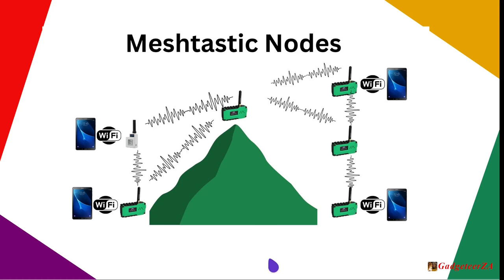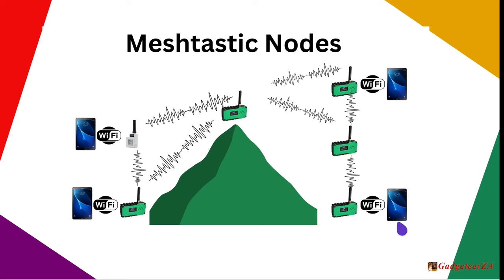Now to explain the mesh network concept non-technically. A typical Meshtastic device — here the Heltec device and the LilyGO T-Echo with stubby antennas — will get one to three kilometers range. You need a phone, tablet, or laptop connected via Wi-Fi or Bluetooth to talk to your Meshtastic device. That is the typical end-user setup, described as a node in the network, just like a computer or radio network node.